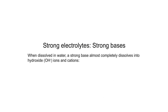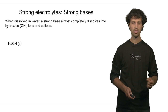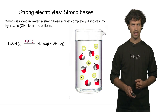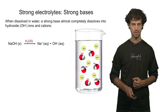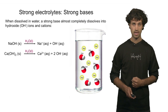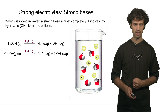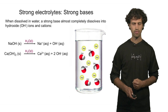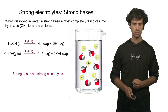Strong bases, like strong acids, are also strong electrolytes. When a strong base is dissolved in water, it fully dissociates into ions, producing hydroxide anions. An example is sodium hydroxide — when dissolved in water, it fully dissociates into sodium ions and hydroxide anions. Another example is calcium hydroxide, which also fully dissociates into hydroxide ions and the corresponding cation. In this process, a lot of ions can be produced, and therefore strong bases are considered strong electrolytes.